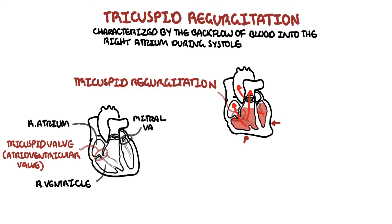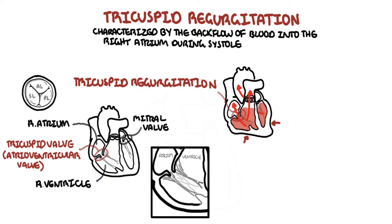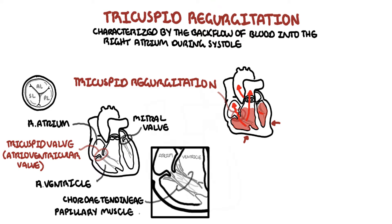Anatomically, the tricuspid valve consists of three leaflets: anterior, septal, and posterior leaflets. The tricuspid and mitral valves are supported by the attachment of fibrous cords and papillary muscles, which are located on the interior surface of the ventricles.